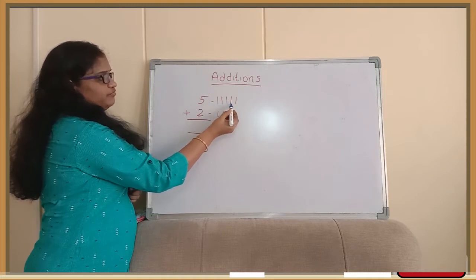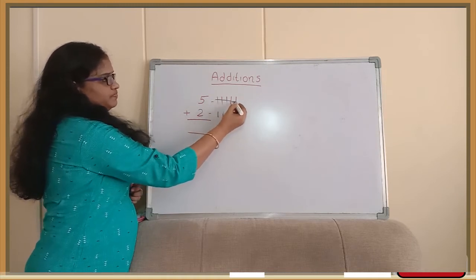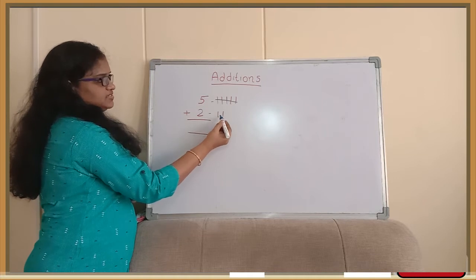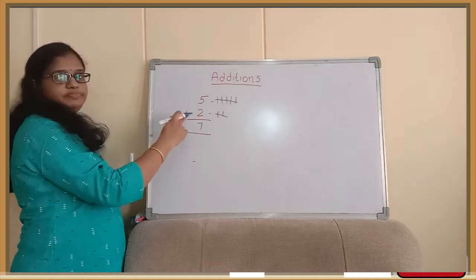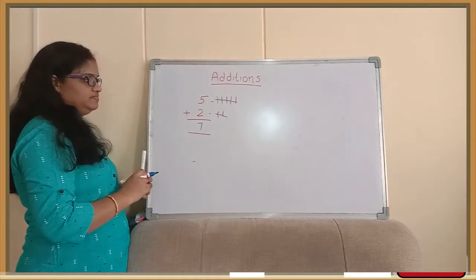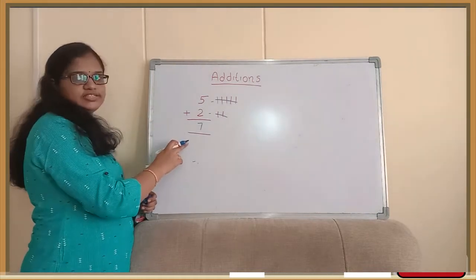These are 5 lines. 1, 2, 3, 4 and 5. Mix 6 and 7. So total is 7. 5 plus 2 is 7. This is the single digit addition.